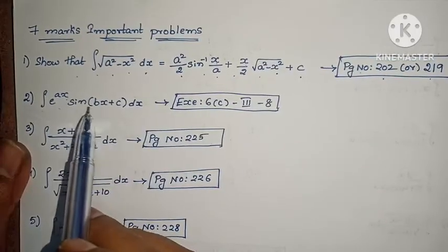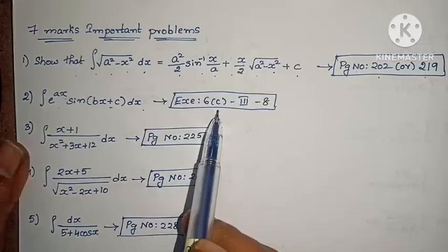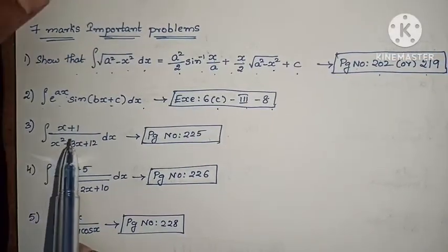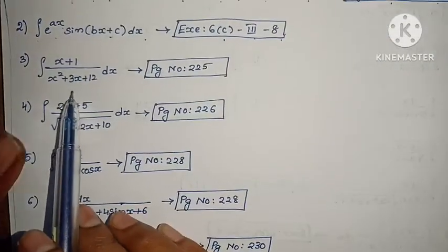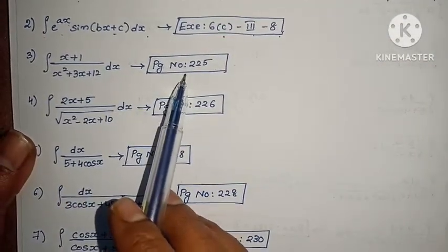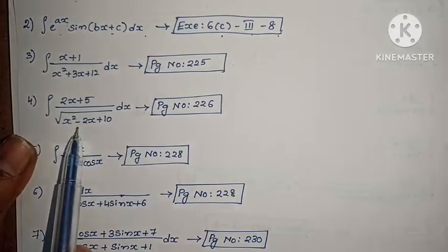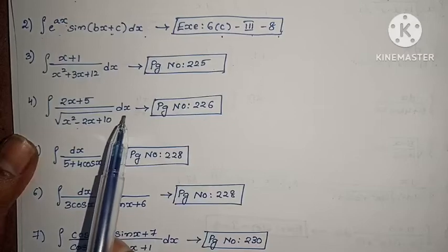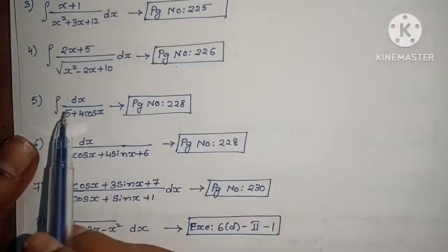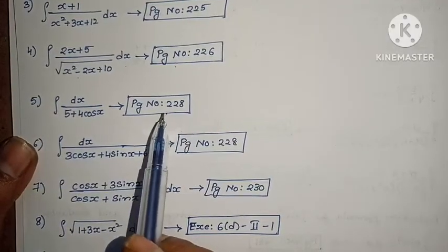Next: integral of eᵃˣ · sin(bx + c) dx, exercise 6c, Roman numeral 3, 8th problem. Next: integral of (x+1)/(x² + 3x + 12) dx, example problem, page number 225. Integral of (2x+5)/√(x² − 2x + 10) dx, page number 226, example problem. Integral of dx/(5 + 4 cos x), page number 228.